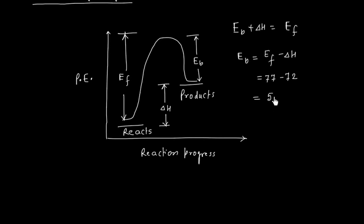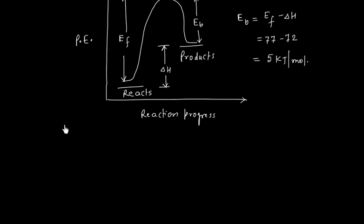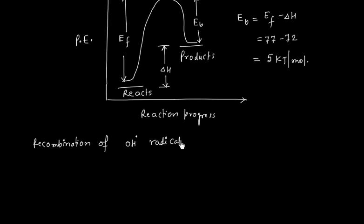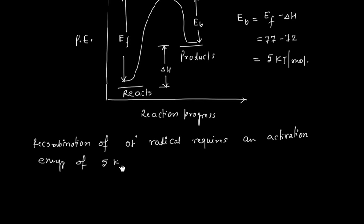So this will be 5 kJ per mole. That is, the recombination of OH radicals has an activation energy of 5 kJ per mole.